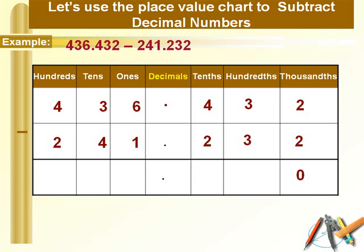Now subtract the digits at the hundredths place: 3 take away 3 gives 0. Then move to the tenths place: 4 take away 2 gives 2. Now let's move to the digits on the left of the decimal point. Subtract the digits at the ones column: 6 take away 1 gives 5.